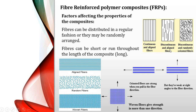Fibers can be continuous or discontinuous. Continuous fibers give more strength to the polymer and are preferred. They may run in one direction or in more than one direction, such as woven into a cloth, which gives strength in multiple directions. Discontinuous or short fibers may be arranged regularly or randomly, and are selected as per the requirement of the material.